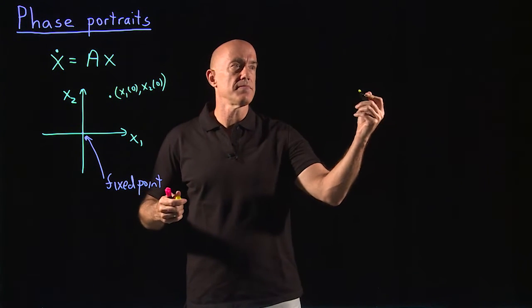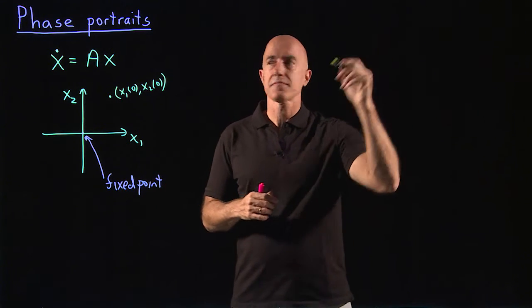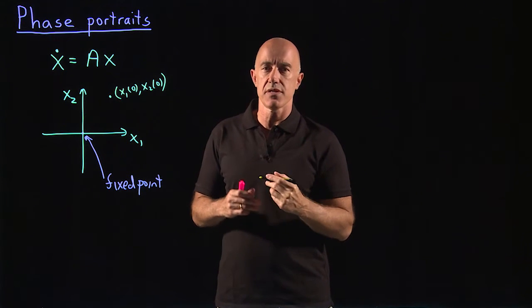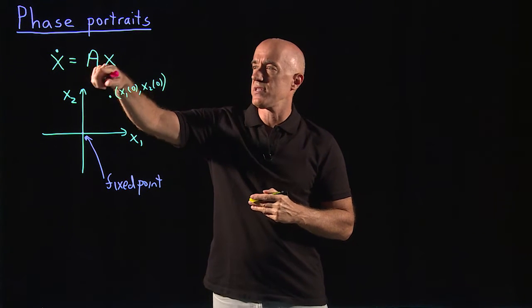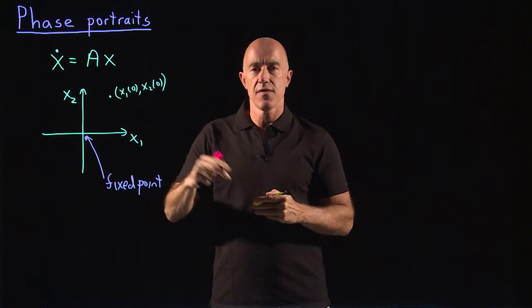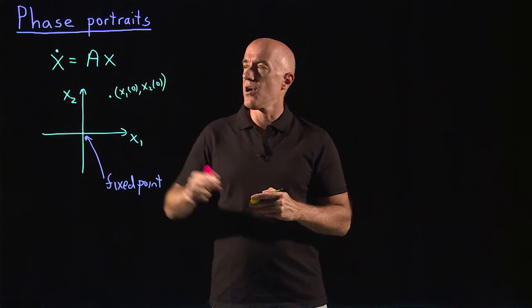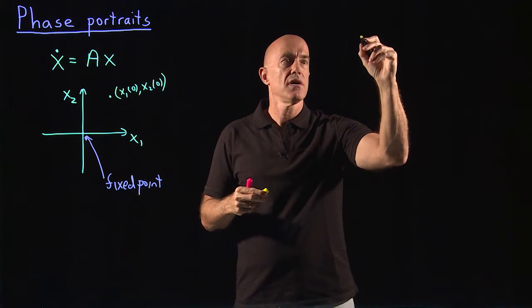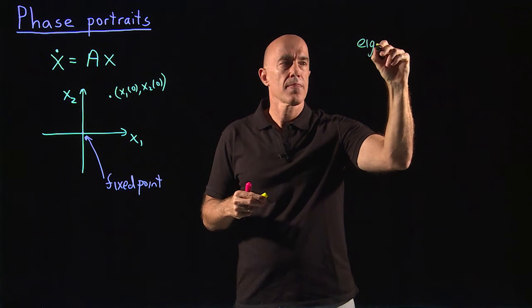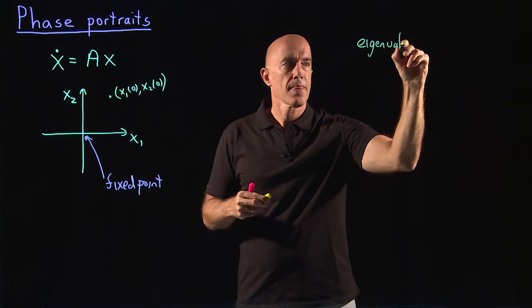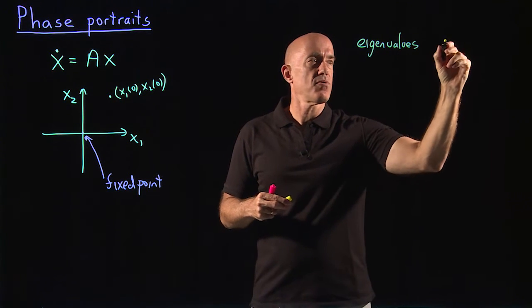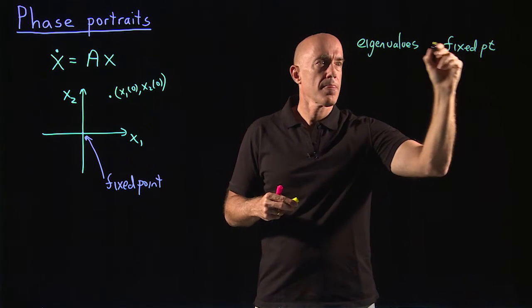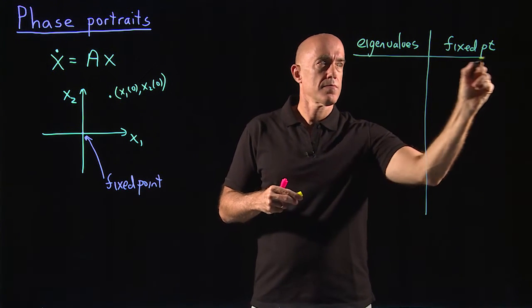So let me make a table here. So the solutions or the qualitative nature of the solutions will depend on the eigenvalues and the eigenvectors of the matrix A. So if we just concentrate on the eigenvalues, I can make a table of eigenvalues and then fixed point. How does the fixed point behave?